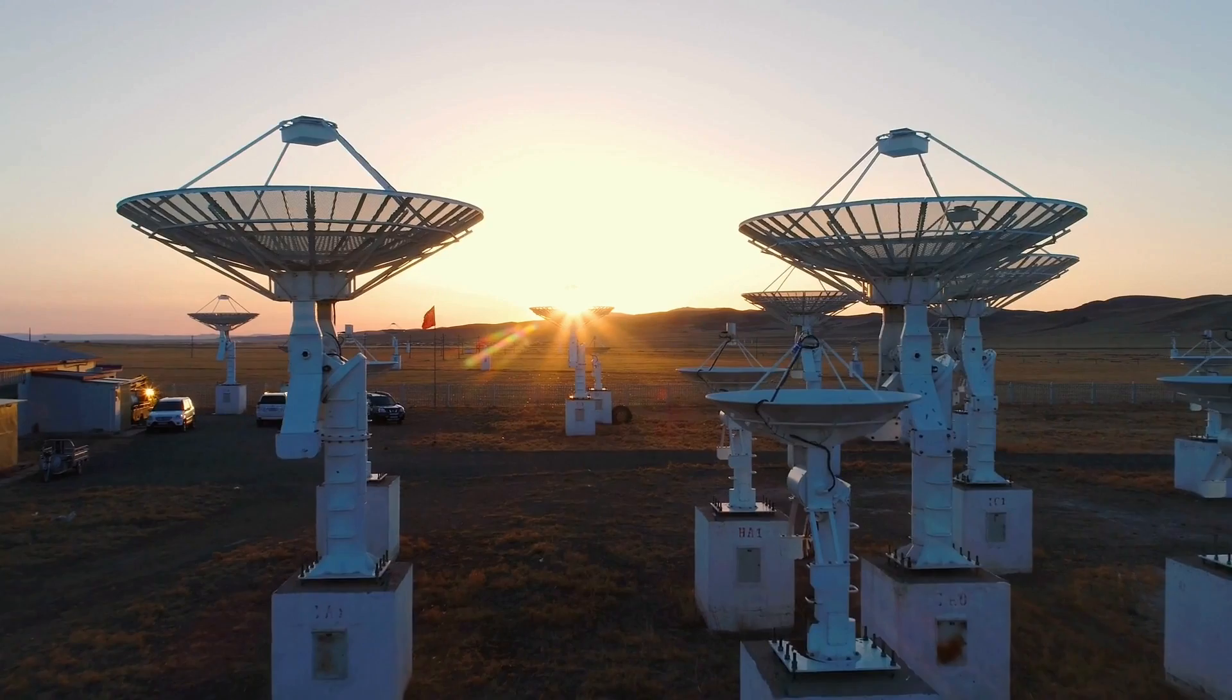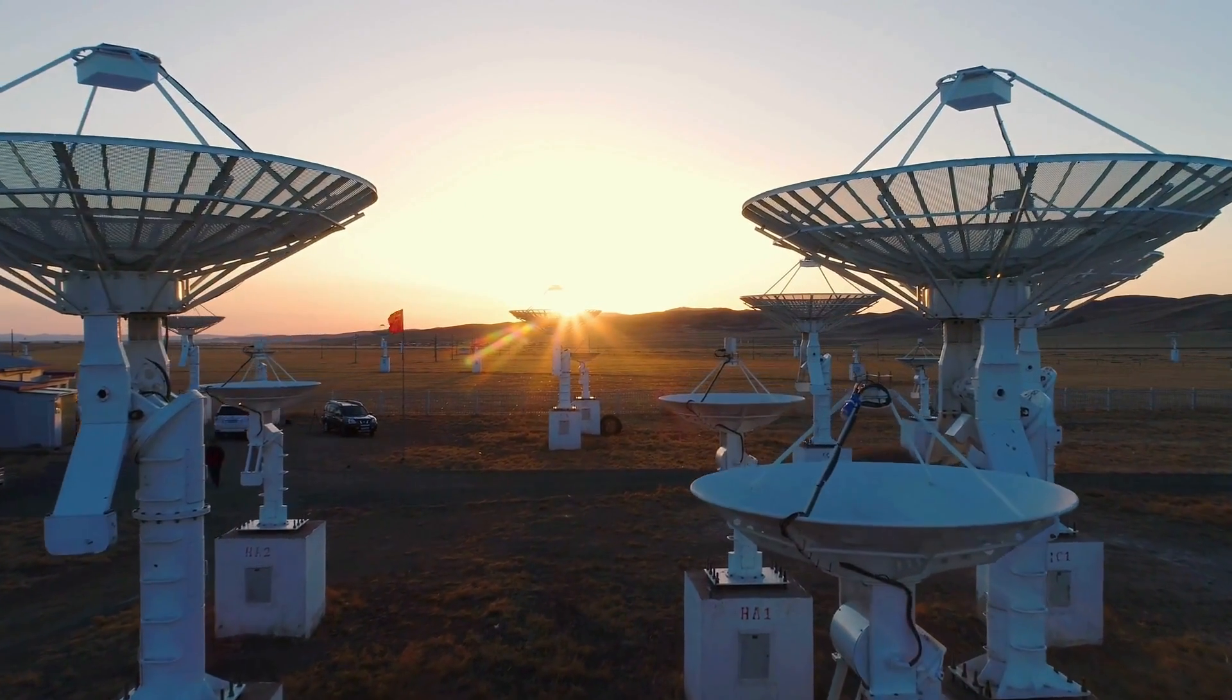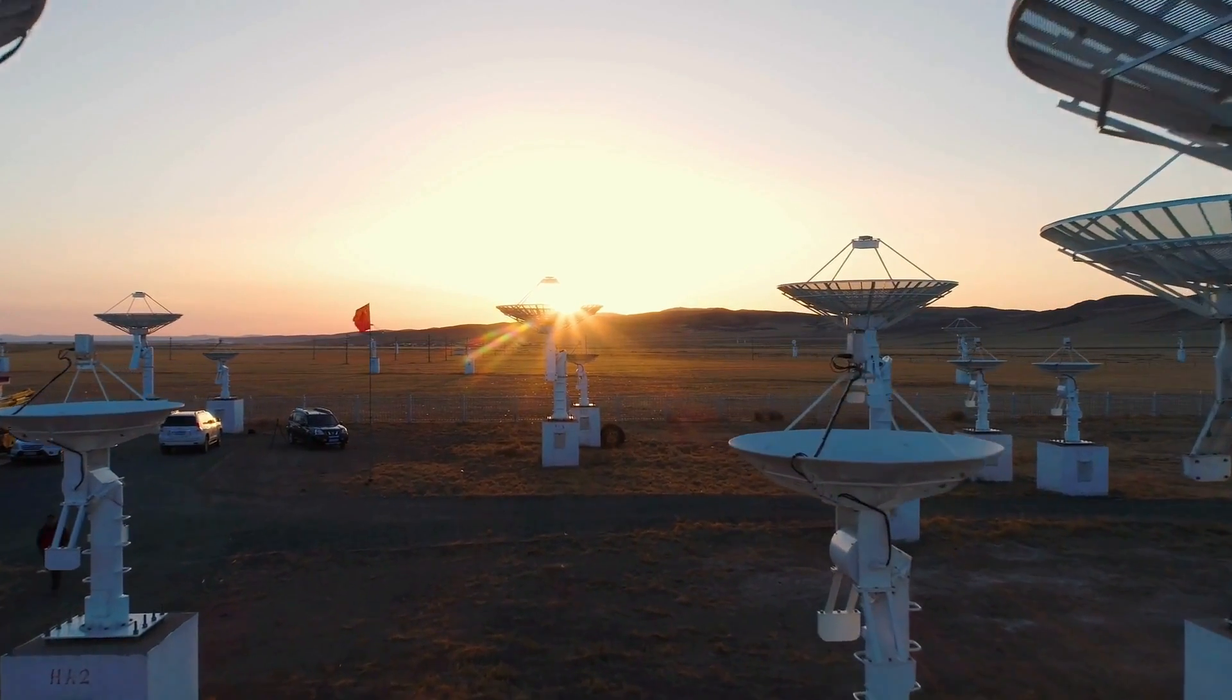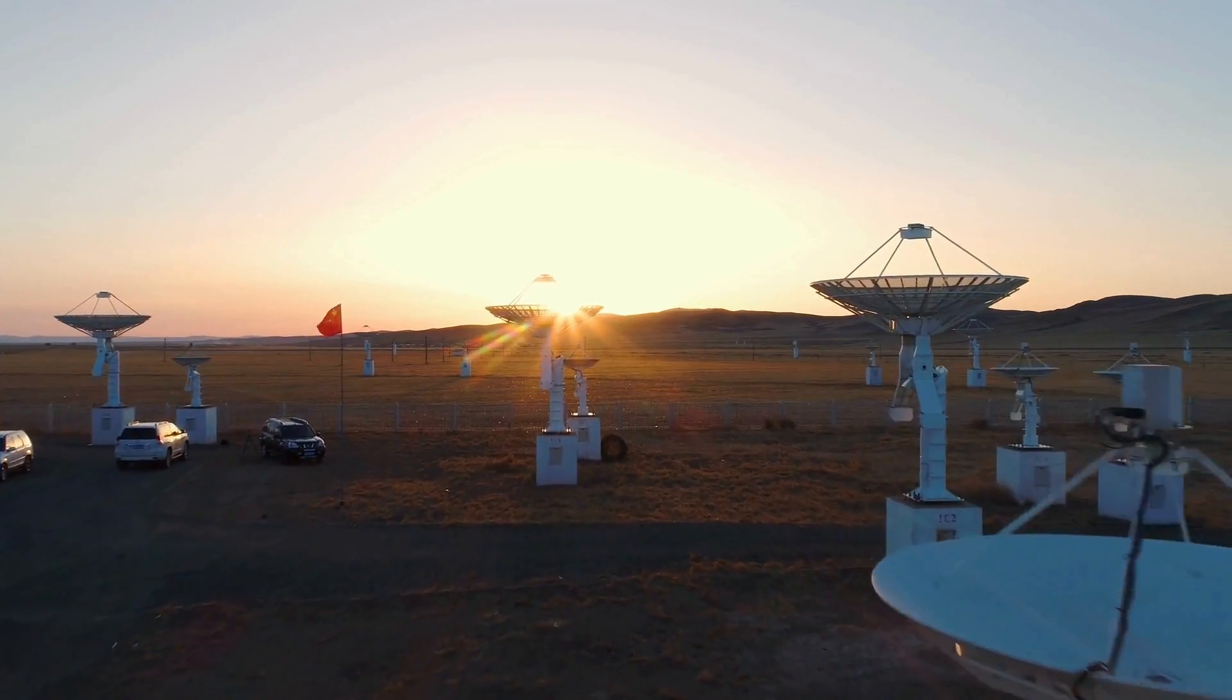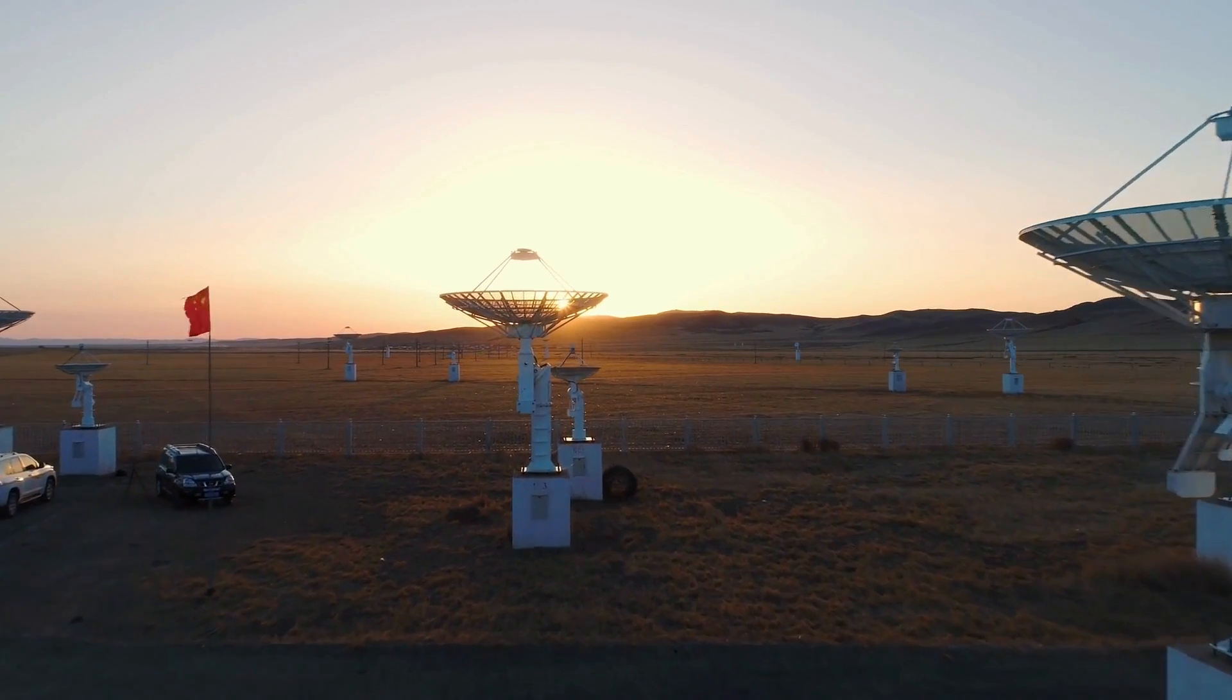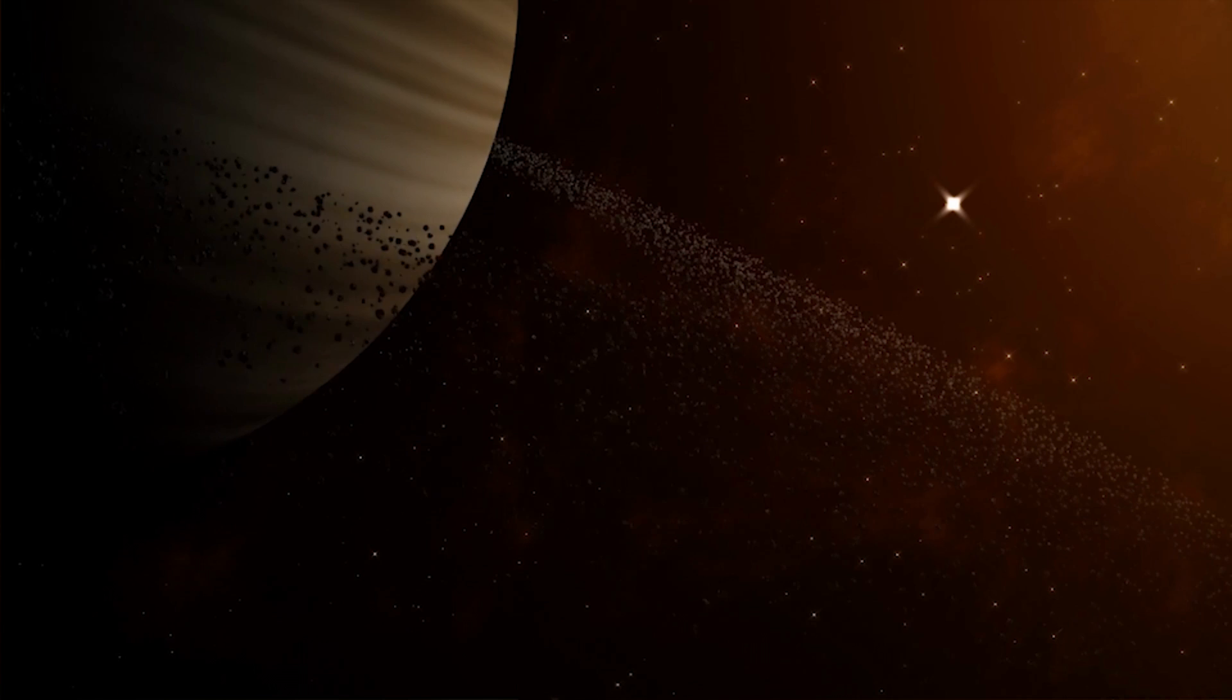And as for the system's ability to accommodate future discoveries, is there anyone who can explain what will happen if, let's say, an Earth-sized object is found 150 astronomical units from the Sun, as seems possible? Will we call it a dwarf just because it is surrounded by debris?